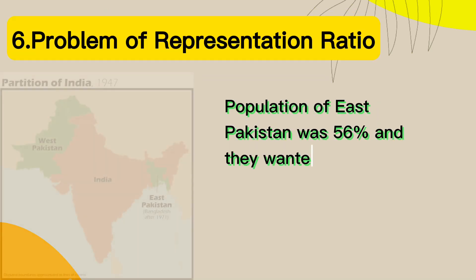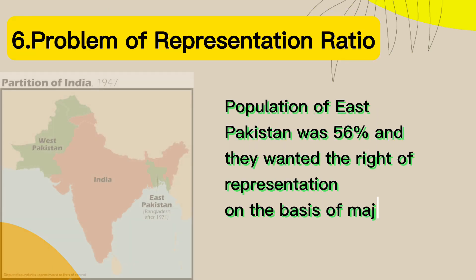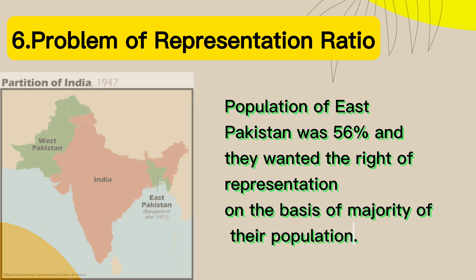6. Problem of representation ratio. The population of East Pakistan was 56% and they wanted the right of representation on the basis of the majority of their population.